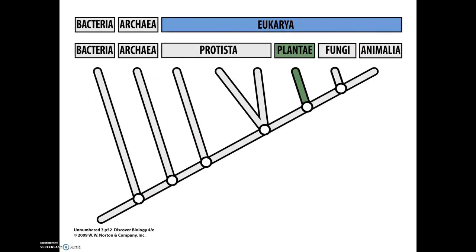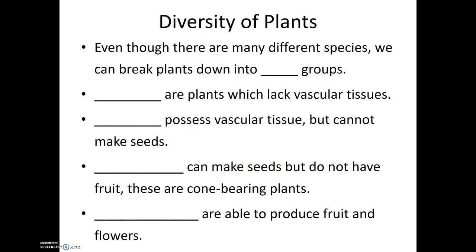When we look at where Kingdom Plantae is located, it's found under Domain Eukarya, just as the protists were and just as fungi and Kingdom Animalia will be as well. Even though there are many different species of plants, we can break all plants down into four major groups.